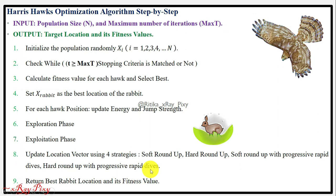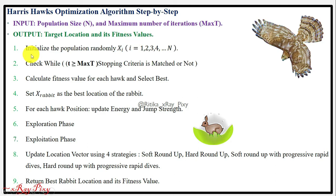The algorithm takes as input the population size and the maximum number of iterations, and the output is the best solution and its fitness value. In the first step, we initialize the population randomly, where x represents the position for each candidate, i represents the index of the agent, and n represents the total number of agents.